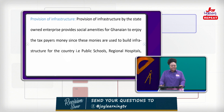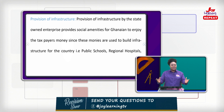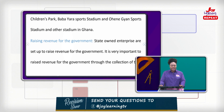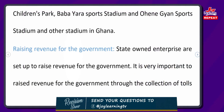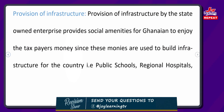Provision of infrastructure: state-owned enterprises provide social amenities for Ghanaians to enjoy using taxpayers' money, since these monies are used to build infrastructure for the country. Public schools are built with taxpayers' money. Regional hospitals, Children's Parks, Baba Yara Sports Stadium, and other stadiums in Ghana are all part of the creation of infrastructure.